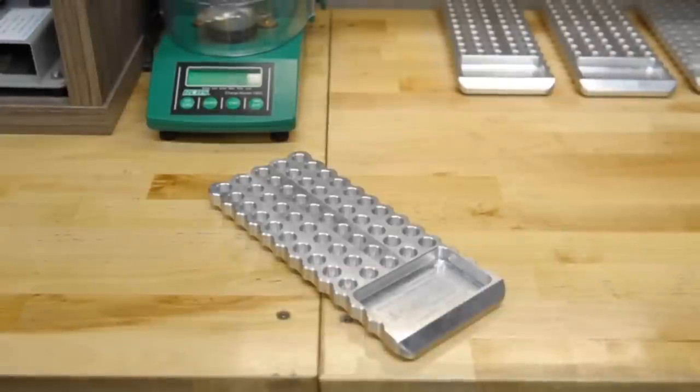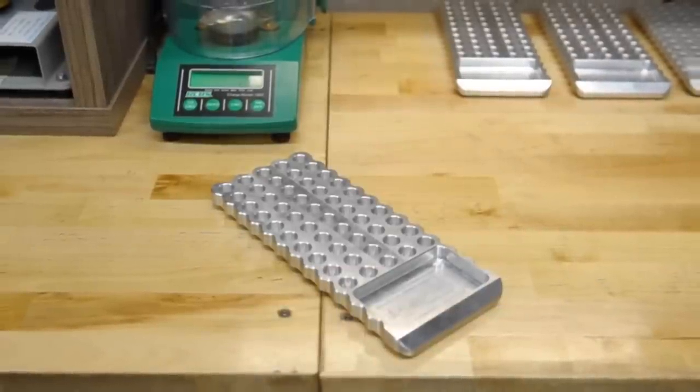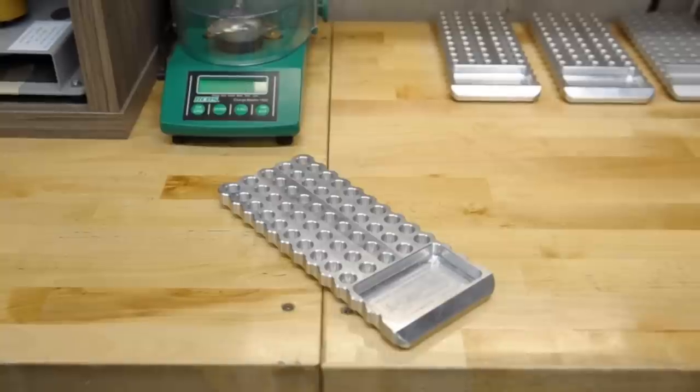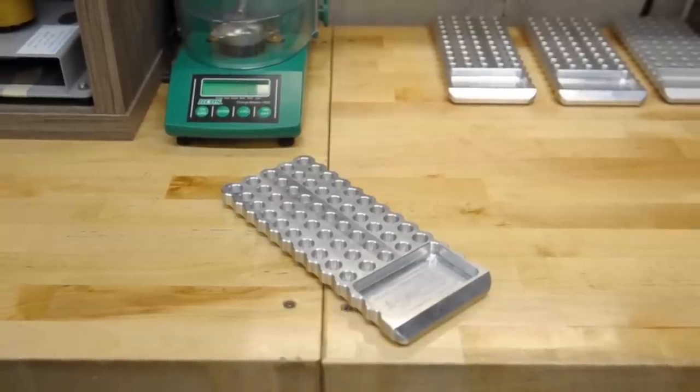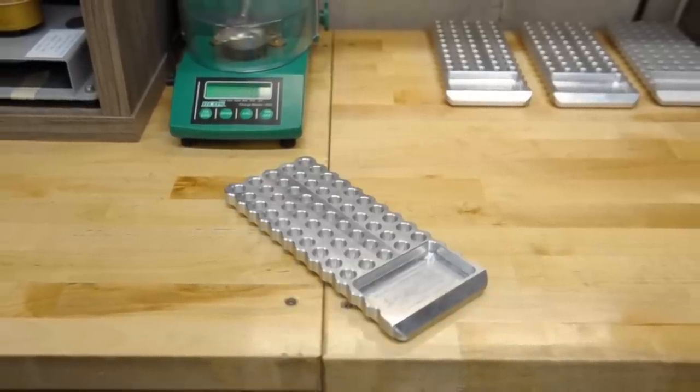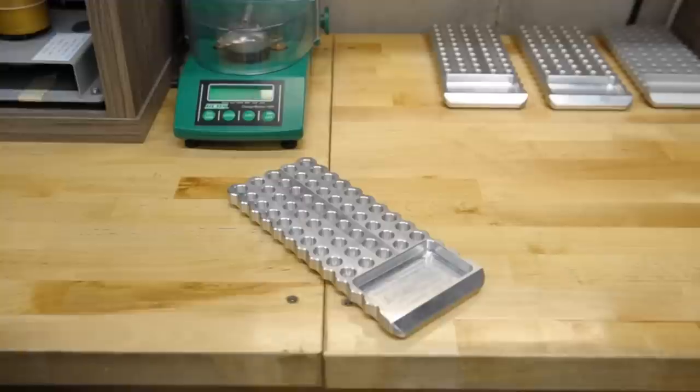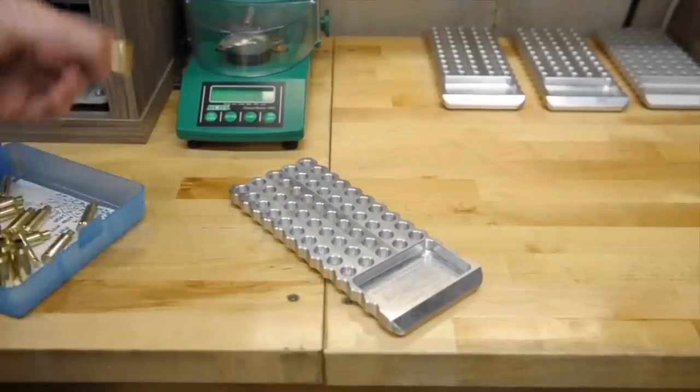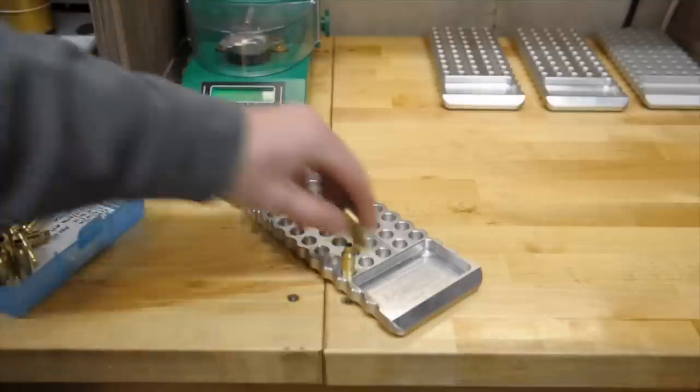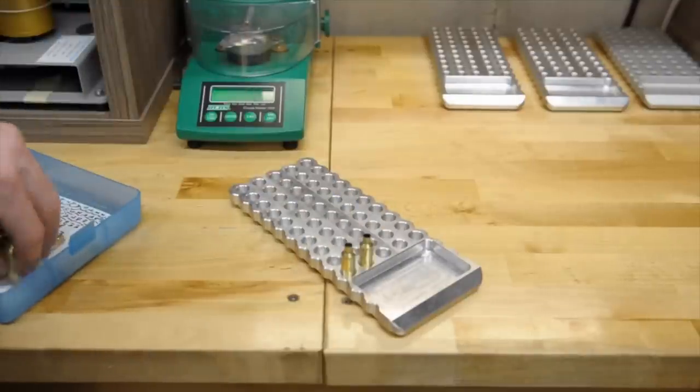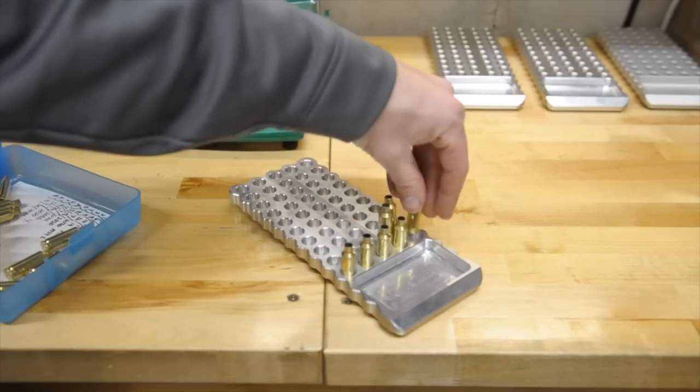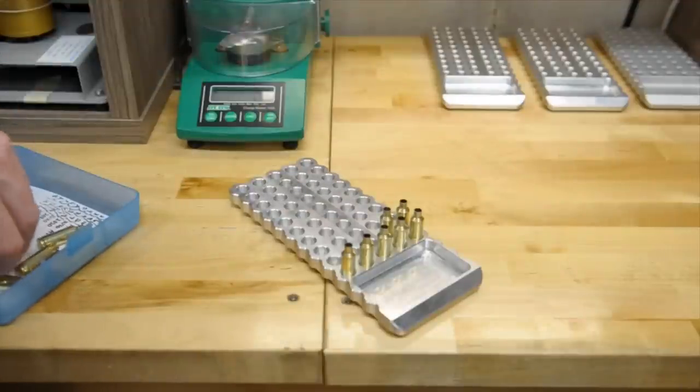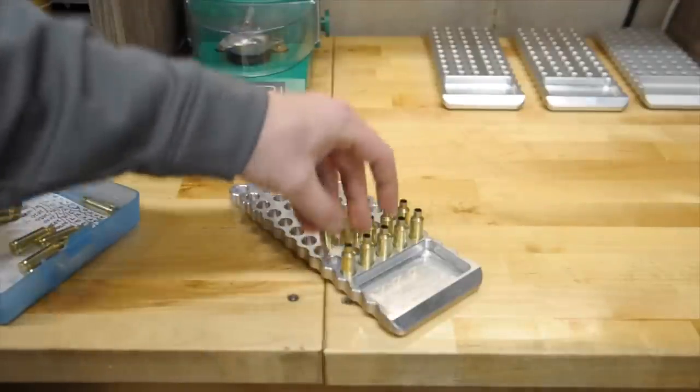Alright, moving on to the nice trays that I told you to buy. Hopefully you did, hopefully you didn't buy some cheap plastic ones. If you bought these from Area 419, you'll thank me. Because here's where we set our brass into the trays for loading. Nothing fancy here. Just grab a handful, fill it up.